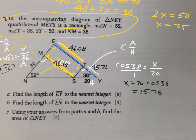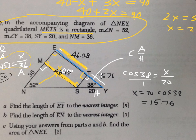Okay. Rounding to the nearest integer, adding these two together, so E to Y would be 46.08 plus 15.76 which is about 62.